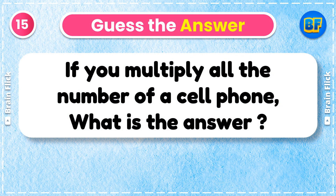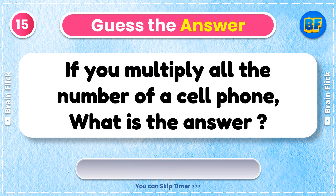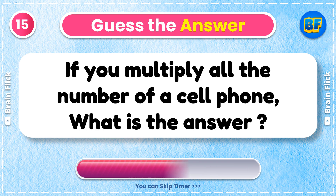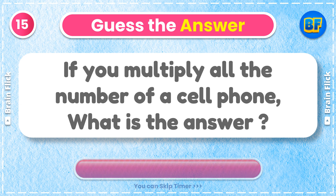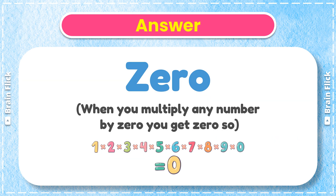Riddle 15. If you multiply all the numbers on a cell phone, what is the answer? Answer: When you multiply any number by 0, you get 0.